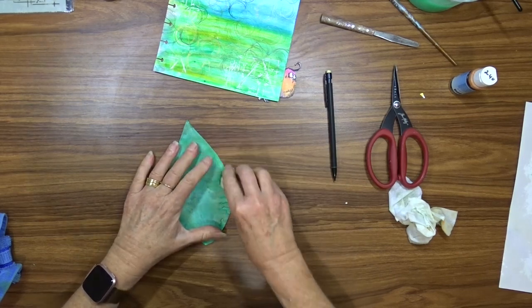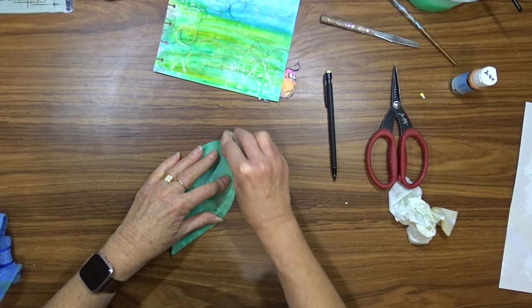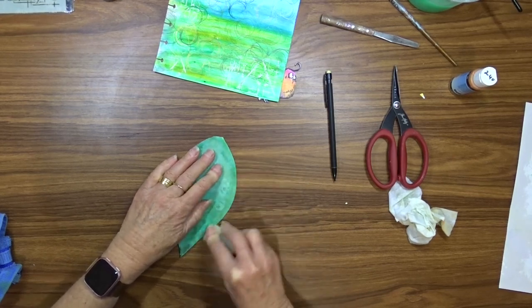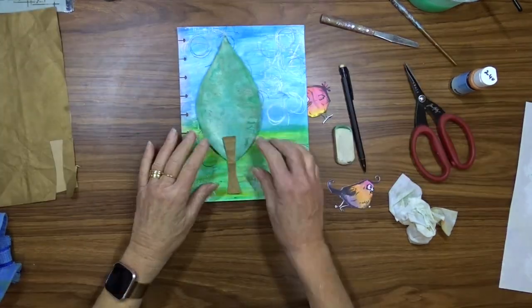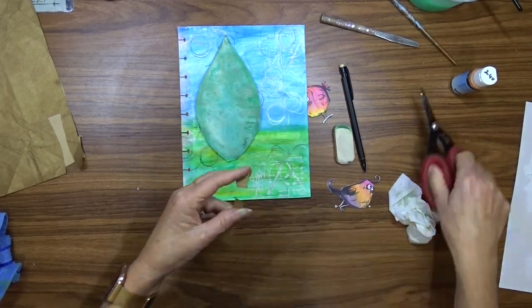When I went to rub the line out that I'd put on there with a pencil I found that the rubber took off a lot of the glimmer, so that's a little trick to be learned there. I cut a tree trunk from a piece of paper from my scrap stash.